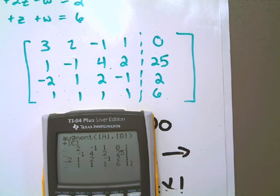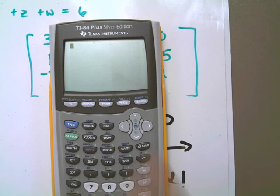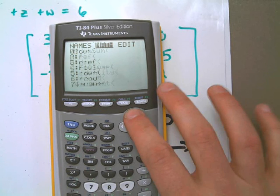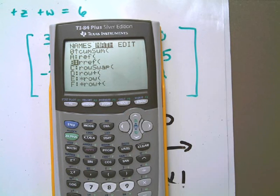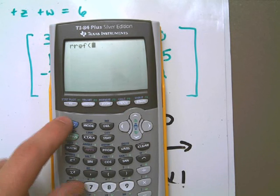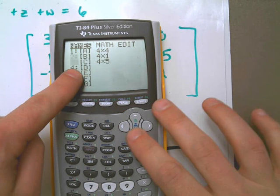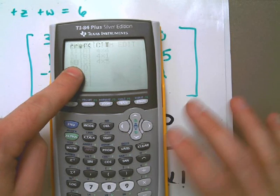Now what I can do to solve for X, Y, Z, and W easily is I'm going to hit second quit. Okay, get out of here completely. And what I can do is I can go back to second matrix, go back to math. I'm going to find the reduced row echelon form of our new matrix matrix C. So I go to second math. You saw that. I just did rref. If you don't know how to do this, you might want to go back and watch the other video I have. Second matrix for C, hit enter.